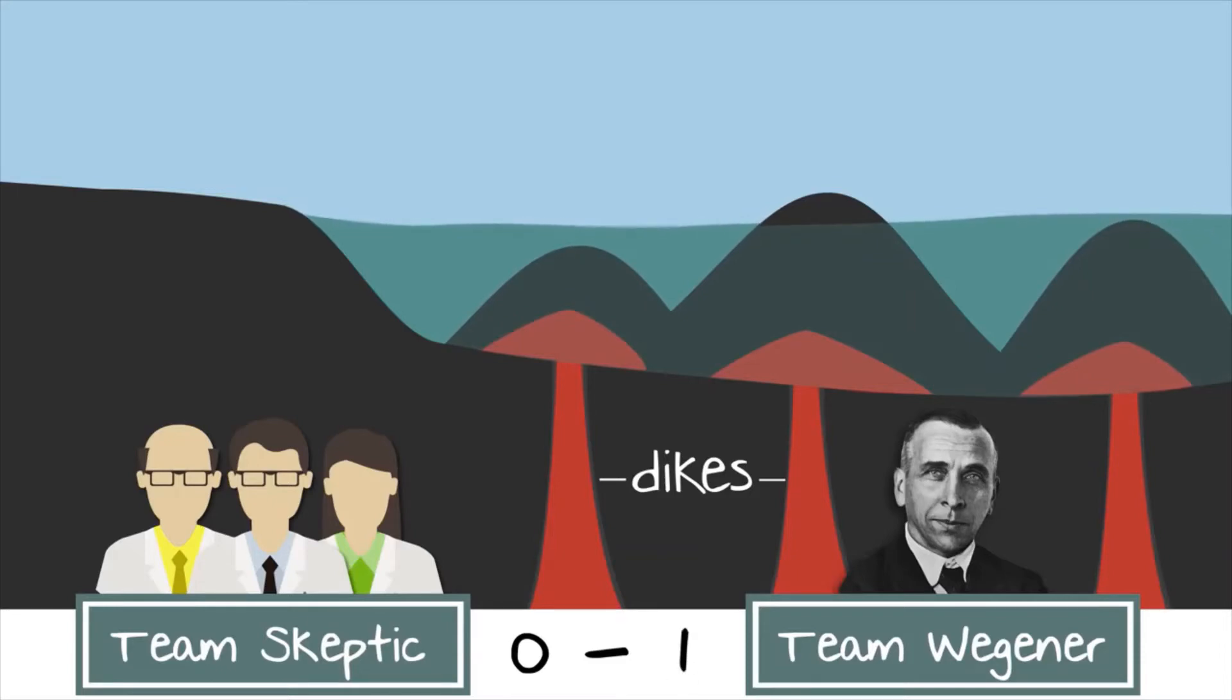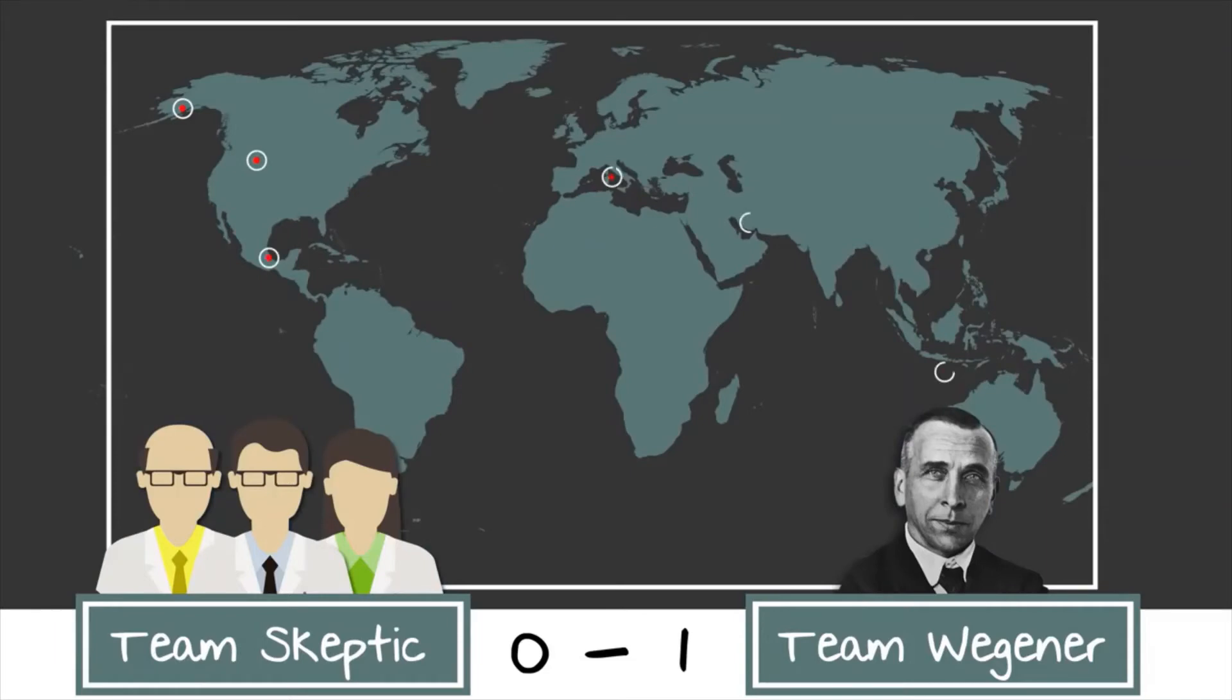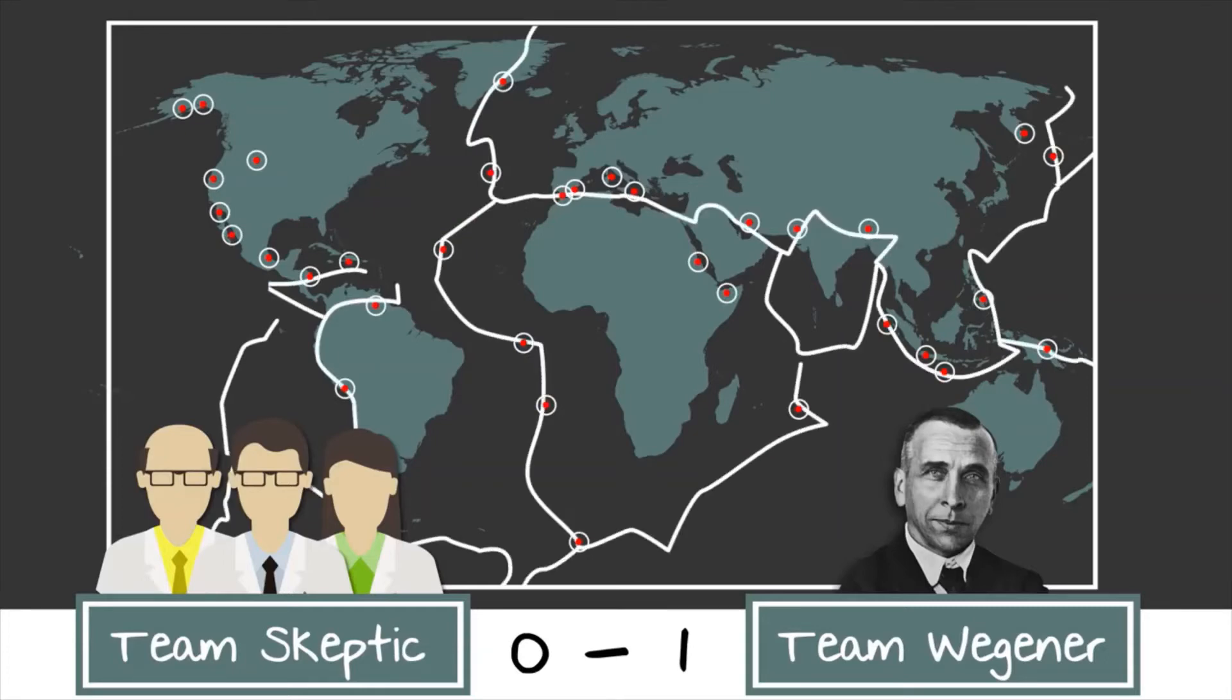Point Wegener. Not long after, scientists started plotting the location of earthquakes and volcanoes around the world and observed that the location of those events followed a similar pattern to the outline of the plates Wegener proposed.